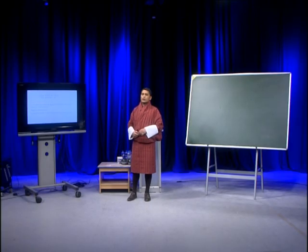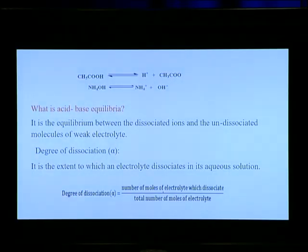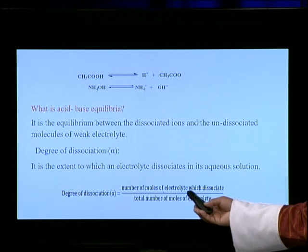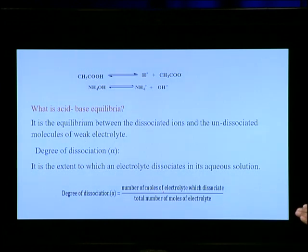Let's look at what is degree of dissociation. Degree of dissociation is defined as the extent to which an electrolyte dissociates in its aqueous solution. If a substance undergoes dissociation up to 50%, the degree of dissociation is 50%, meaning half of the molecules have undergone dissociation. Mathematically, degree of dissociation is calculated as the number of moles of electrolyte which dissociate in solution divided by the total number of moles of electrolyte taken in solution.